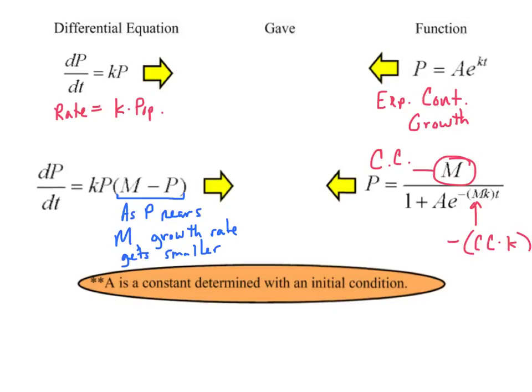And in both cases, both equations, A is simply a constant that we would be given some condition to solve for. In the previous example of the bears, that was the fact that at time 0, there were 10 bears. So both of those, A is just a constant that we would solve for later.